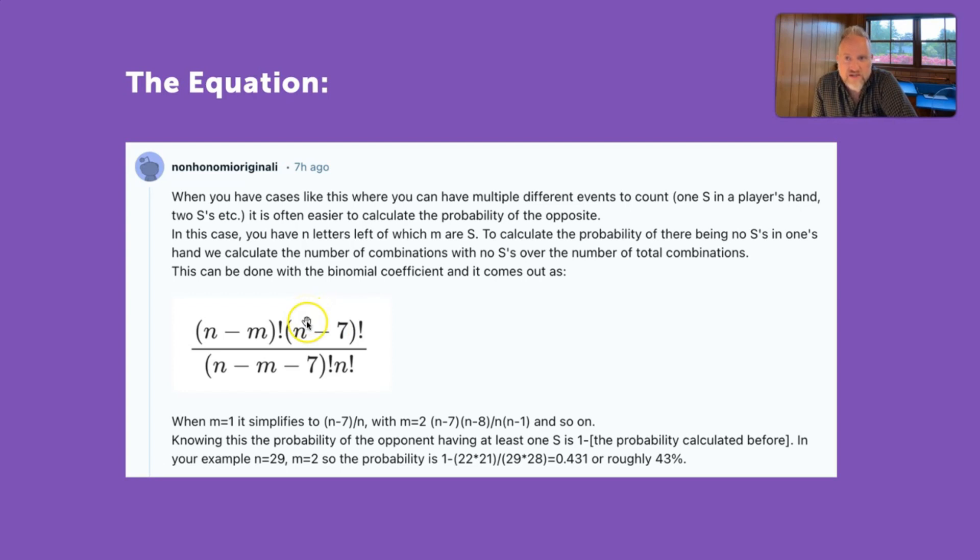So this is the equation for determining if your opponent has an S in their hand at any given time or determining the probability that they have an S in their hand. And this is very important because you want to try and gauge whether it's safe to play a word that could be pluralized or not. And in addition to this, at the end, I think it's interesting to think about the odds that when you draw a tile, it will be either an S or a wild.